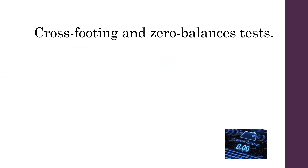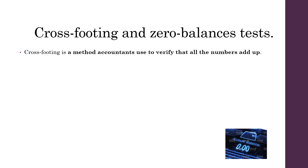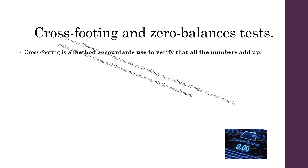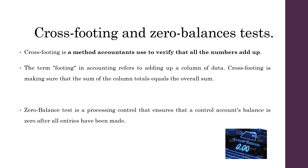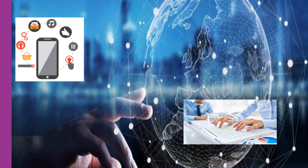Cross-footing and zero balance test are another type of information processing control. In cross-footing, accountants verify that all numbers are correctly added. The term footing in accounting refers to adding up a column of data, and cross-footing ensures that the sum of the column totals equals the overall sum. Zero balance test is a processing control that ensures the control account's balance is zero after all entries have been made. We hope you have gained knowledge regarding controls in the digital environment. Thank you and stay safe.